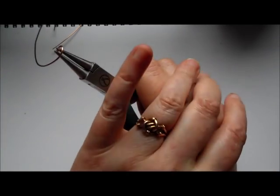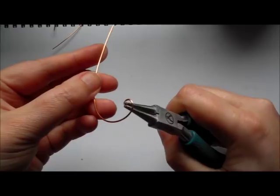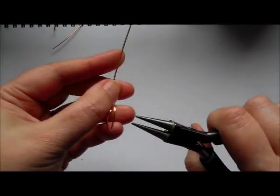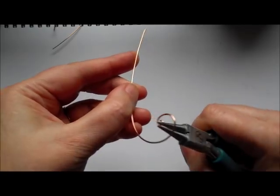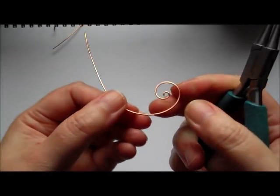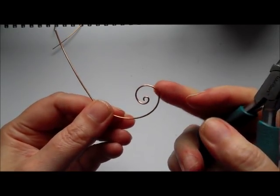So round nose pliers into the loop. My right hand I am twisting. Left hand is gently holding the wire while the right hand produces all the movement. You can see my left hand is hardly moving at all.